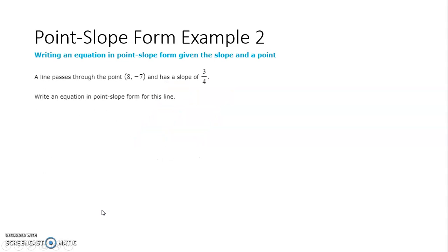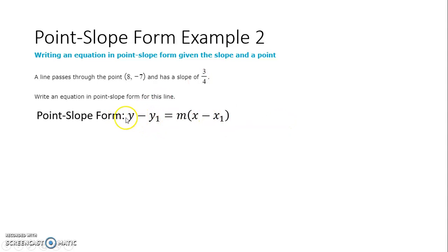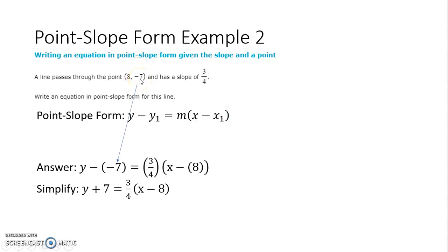So we're going to write the equation of a line in point-slope form, given that the line passes through a point and has a slope of 3 fourths. Here's our basic format: y minus y1 equals M times x minus x1. We simply plug everything in. Y1 goes in here, giving us y minus negative 7, equals the slope 3 fourths, times x minus x1, which is 8. Then we simplify: minus a negative becomes a plus. And we're done in point-slope form.